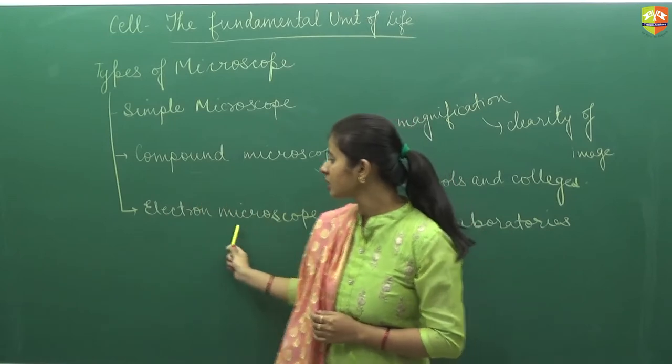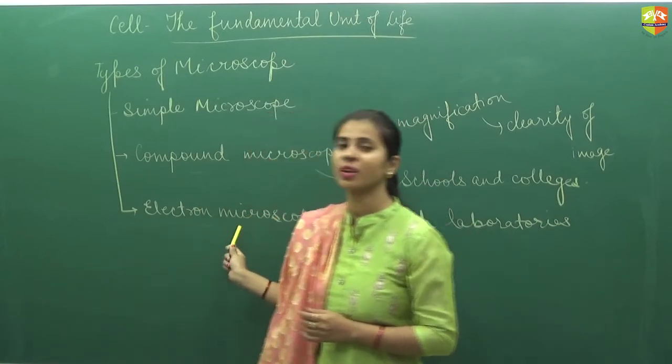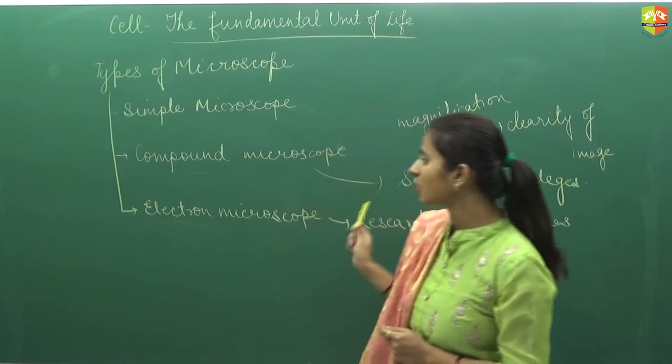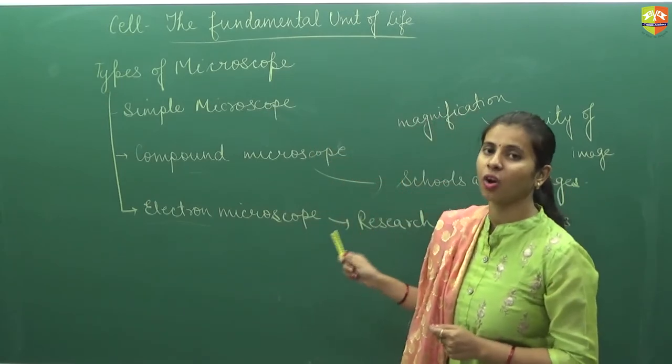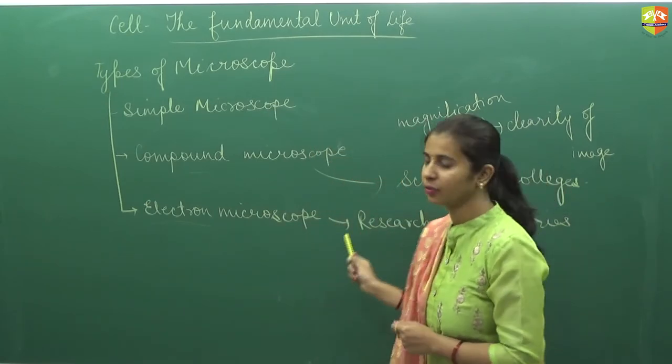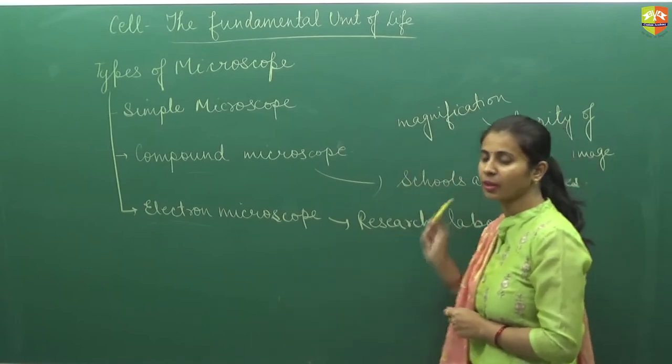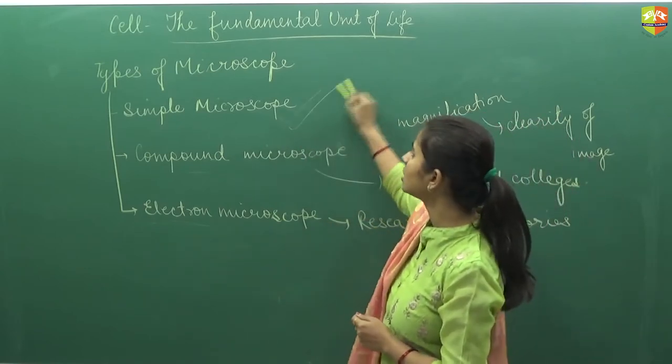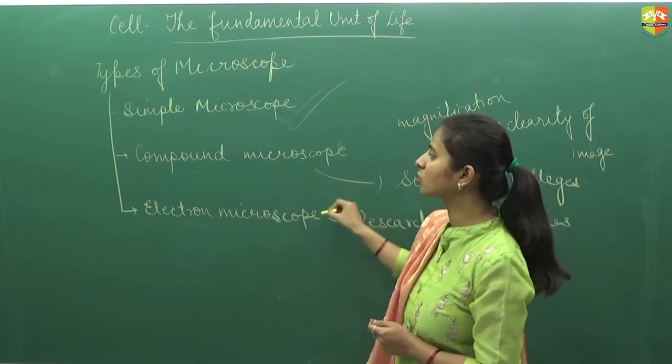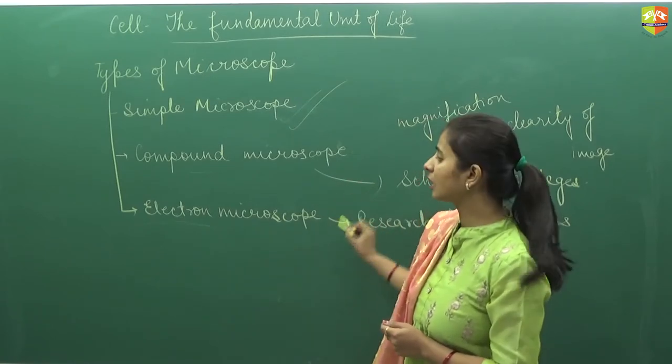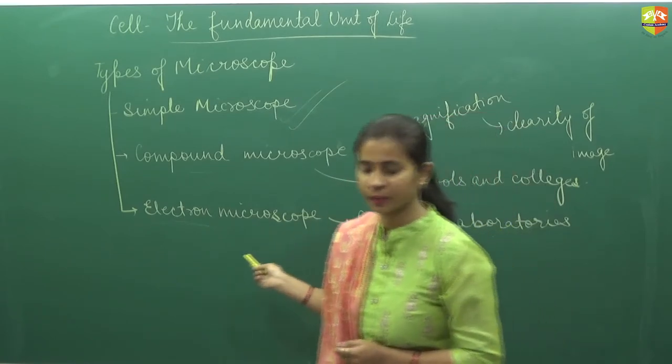And the most latest is the electron microscope that is functioning on the basis of the electron beams. That is the most magnified or their magnification is higher if we compare. So these are the three types of microscope. In your syllabus is simple microscope, but you should also know what is compound and electron microscope a little bit.